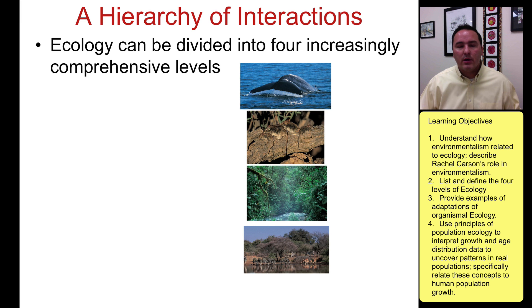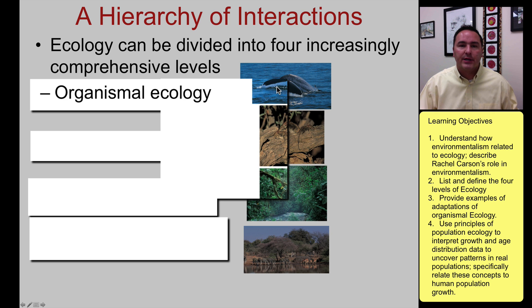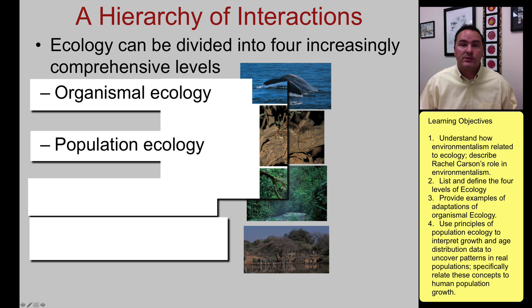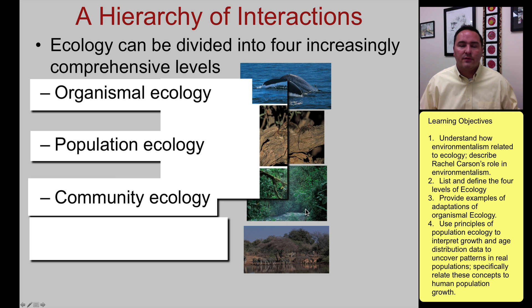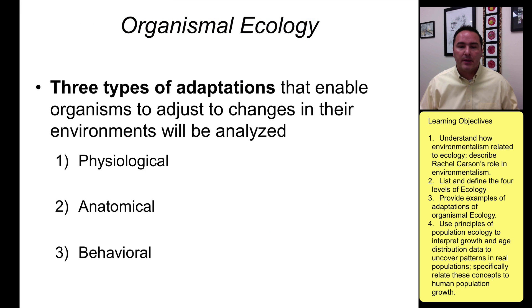When we look at ecology, there are basically four levels we think about: organismal ecology, looking at just the organism; population ecology, looking at a bunch of individuals of the same species; community ecology, looking at all living organisms in the same place at the same time; and ecosystem ecology, which brings in those abiotic factors into the community.